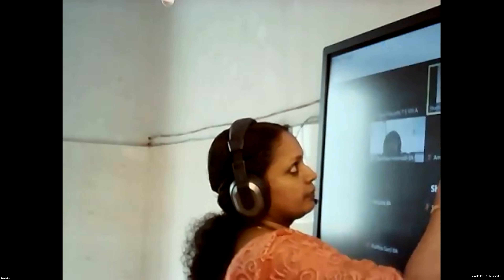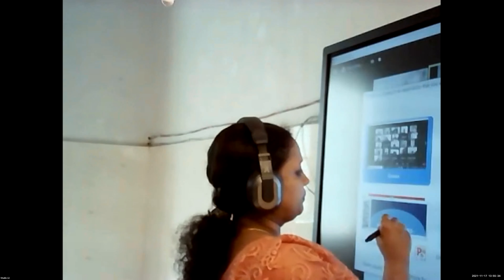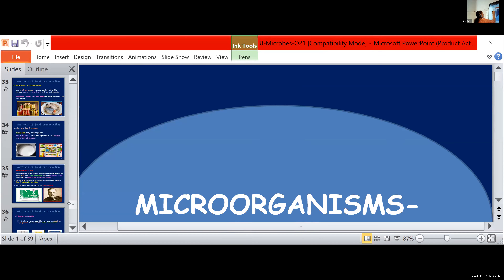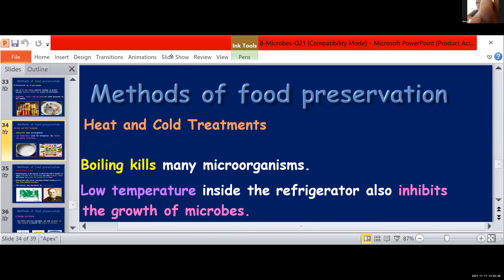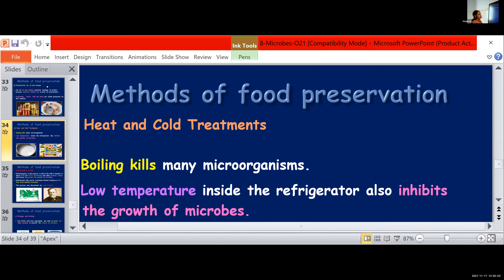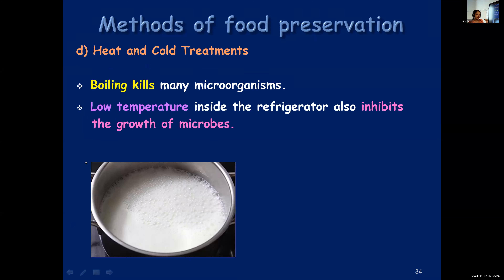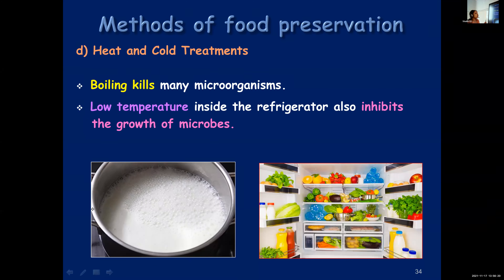Let us learn more about heat and cold treatment. Heat and cold treatment - upon heating, upon boiling, microorganisms can be killed. They cannot survive at high temperature. Similarly, when the temperature is too low, when the temperature is too high or too low, microbes cannot survive. That is why we make use of heat and cold treatment to sterilize food items.